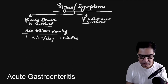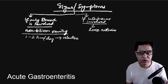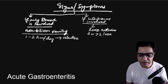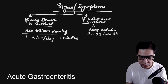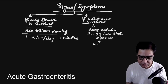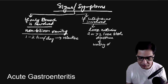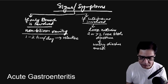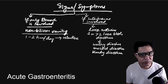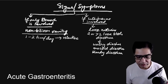If the intestines are involved — whether small or large — the child will have loose motions, also called diarrhea. Diarrhea is defined as two or more loose stools that take the shape of the container. There are three types: watery diarrhea, mucoid diarrhea with mucus, and bloody diarrhea with streaks or frank blood.